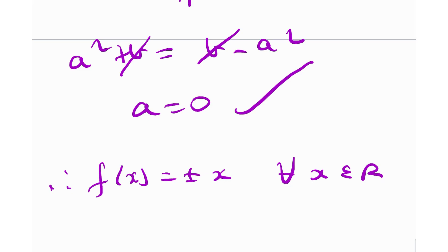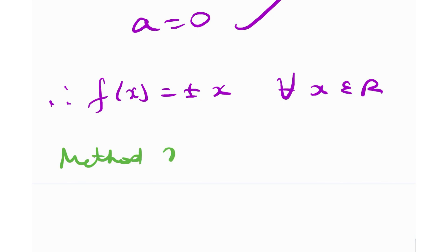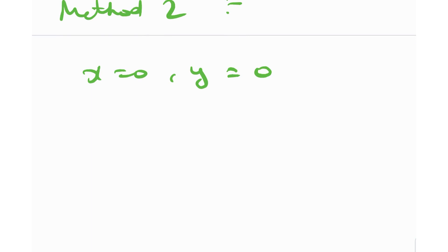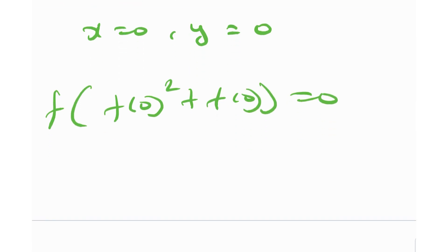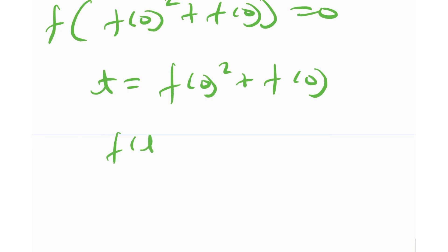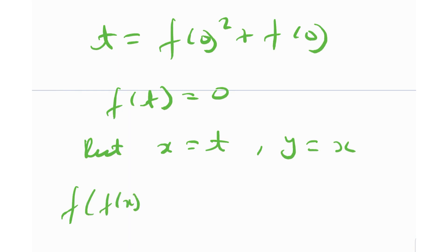Therefore f(x) = ±x for all x ∈ ℝ, and both f(x) = x and f(x) = −x satisfy the functional equation. We have only two solutions: f(x) = x (the identity function) and f(x) = −x. That was Method 1 of solving it, which obviously involved the pointwise trap — quite irritating and abstract at times. So we're going to look at Method 2, which completely avoids the pointwise trap. We plug in x = 0, y = 0 in the original equation — same step one as in Method 1 — and get f(f(0)² + f(0)) = 0.